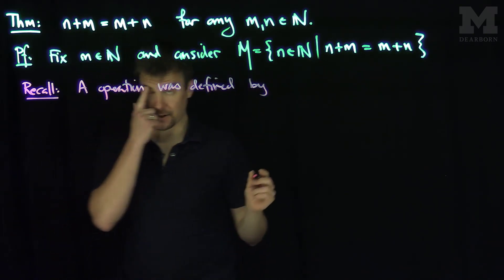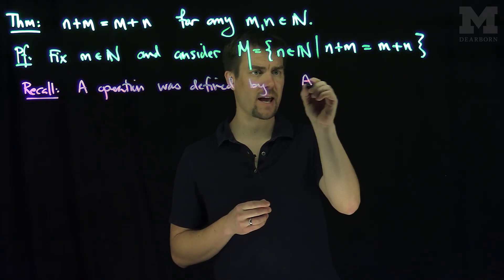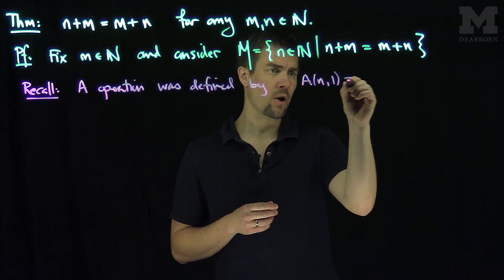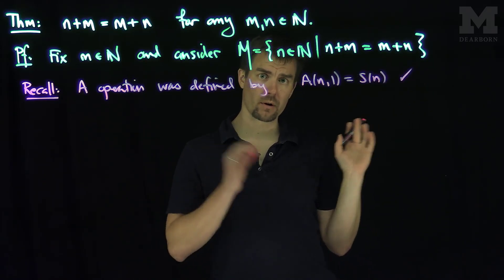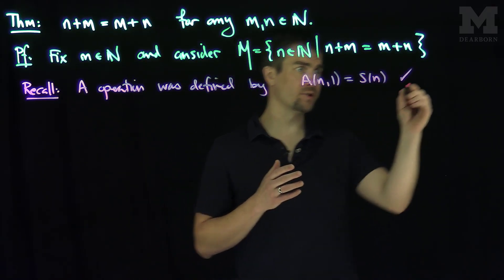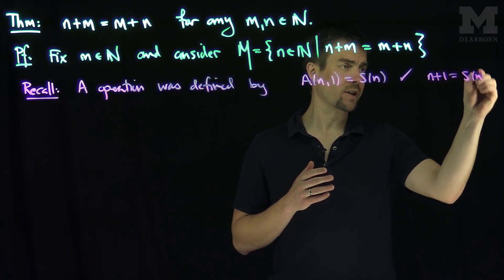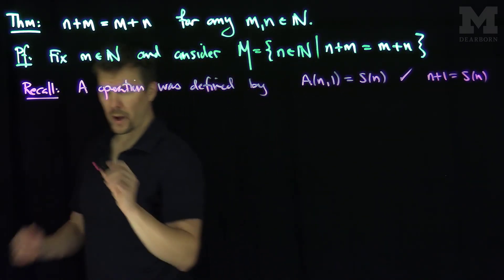The first fact we had for the operation was that A of n and 1 was going to be S(n), the successor of n. That was always true for this addition operation. In other words, n plus 1 is always equal to the successor of n.